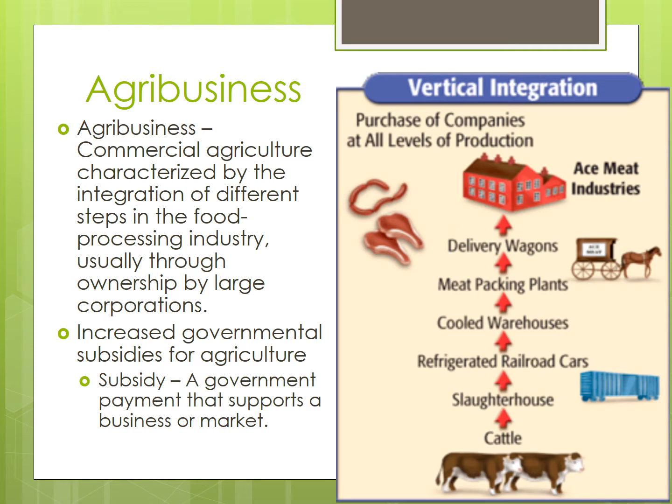Agribusiness is commercial agriculture characterized by the integration of different steps in the food processing industry, usually through ownership by large corporations. So far, we've talked about agriculture as a primary sector activity. Agribusinesses, though, don't focus solely on the farm and primary sector, but rather incorporate multiple steps from processing and production, transportation, marketing, retail, and even research and development. So we might see the raw food harvested, then processed, shipped, and marketed all by a single company.